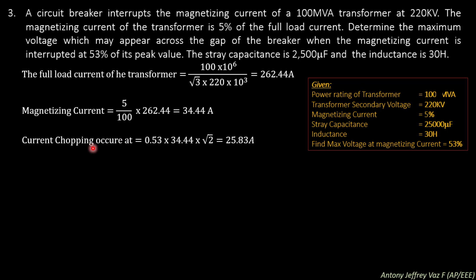Current chopping occurs at 53% of the magnetizing current's peak value. So 0.53 into the magnetizing current, multiplied by root 2 to find the RMS value for the current chopping, gives 25.83 amperes.